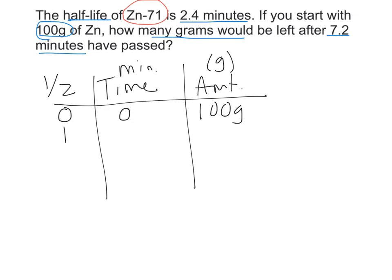Half-life means that after 2.4 minutes half of my amount will be decayed, so this becomes 50. It's important to remember that the amount is always divided by 2, or if you're working backwards you would multiply it by 2. Time is always added.